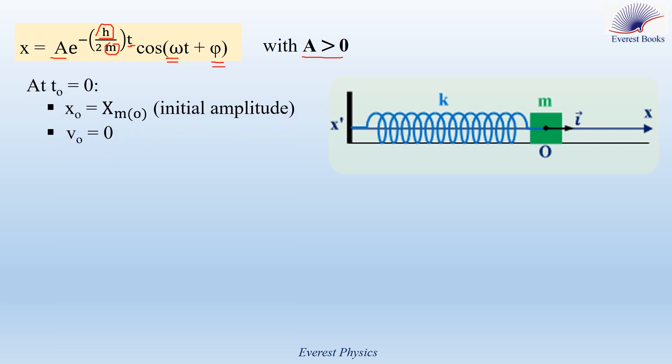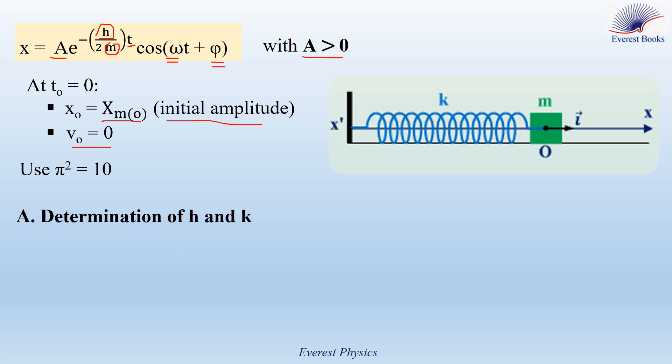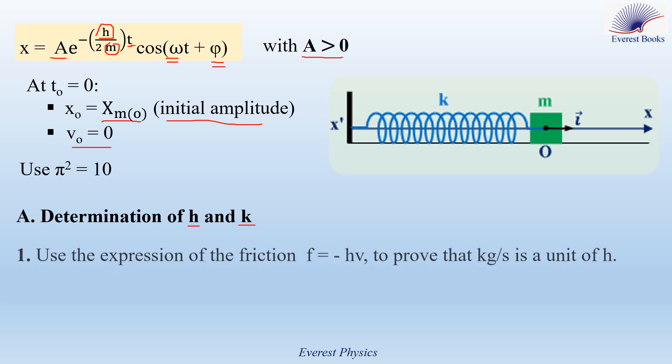Now, the initial conditions: at t₀ equals 0, x₀ is equal to xm₀, where xm₀ is the initial amplitude, and v₀ is equal to 0 — so the block is released from rest at t₀ equals 0. To facilitate the calculations, we will take π² as 10. Let's start with the first part of the problem: determination of the damping coefficient h and the force constant k, part 1.